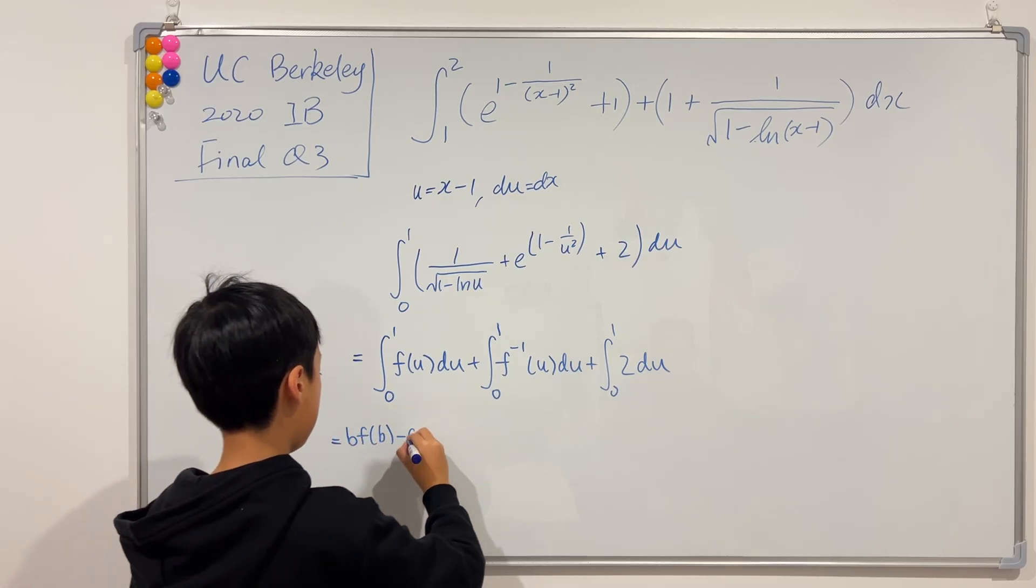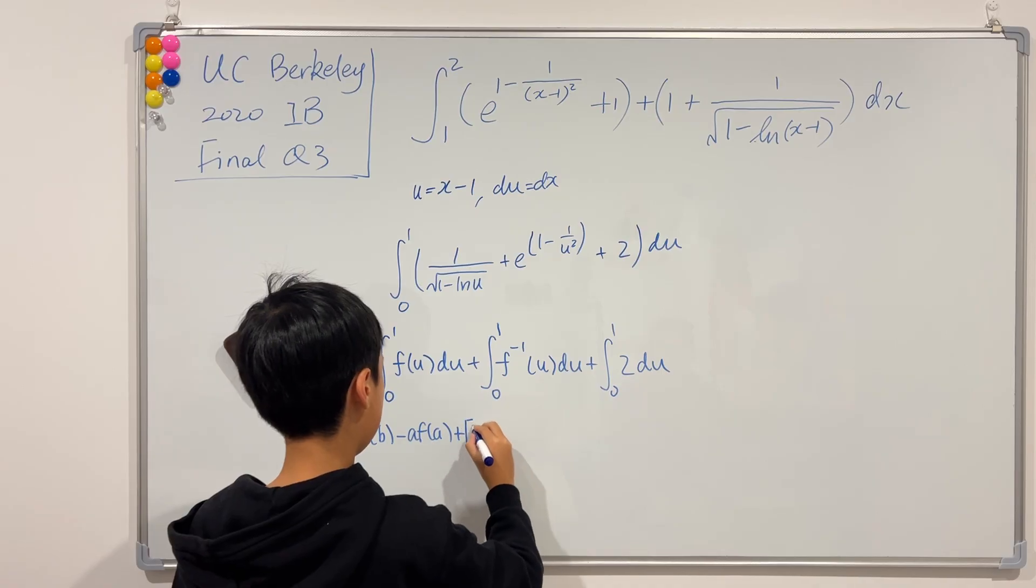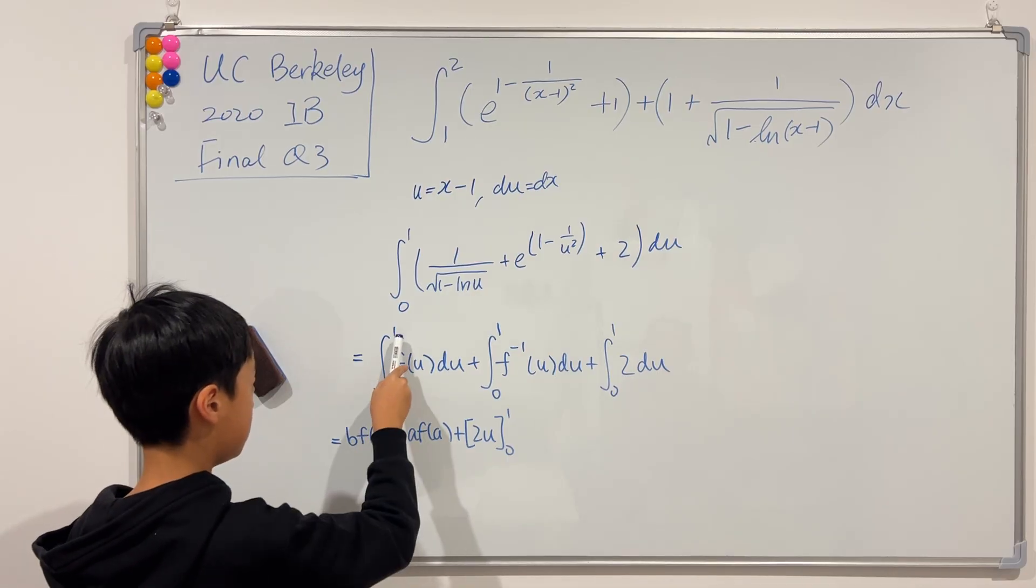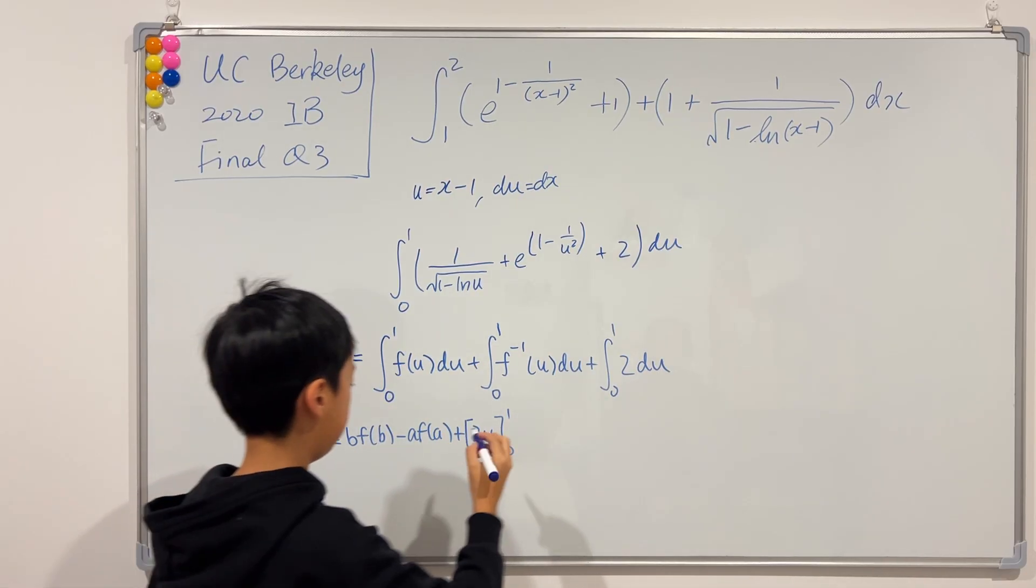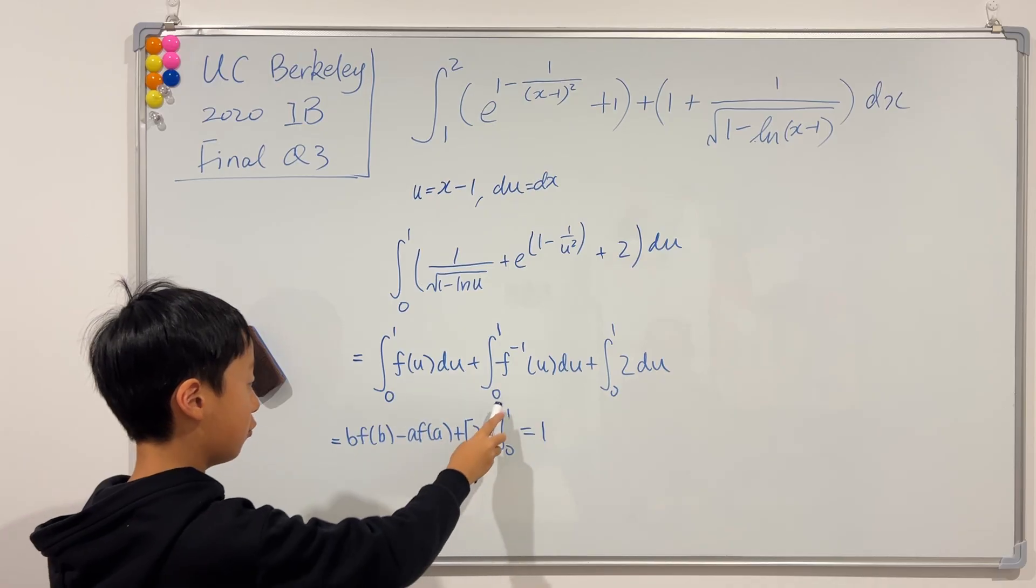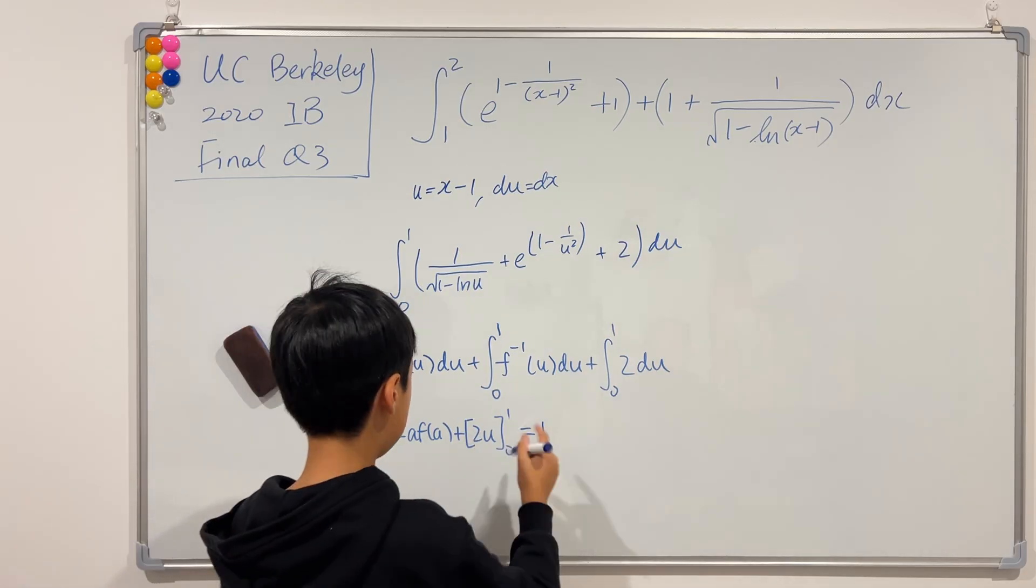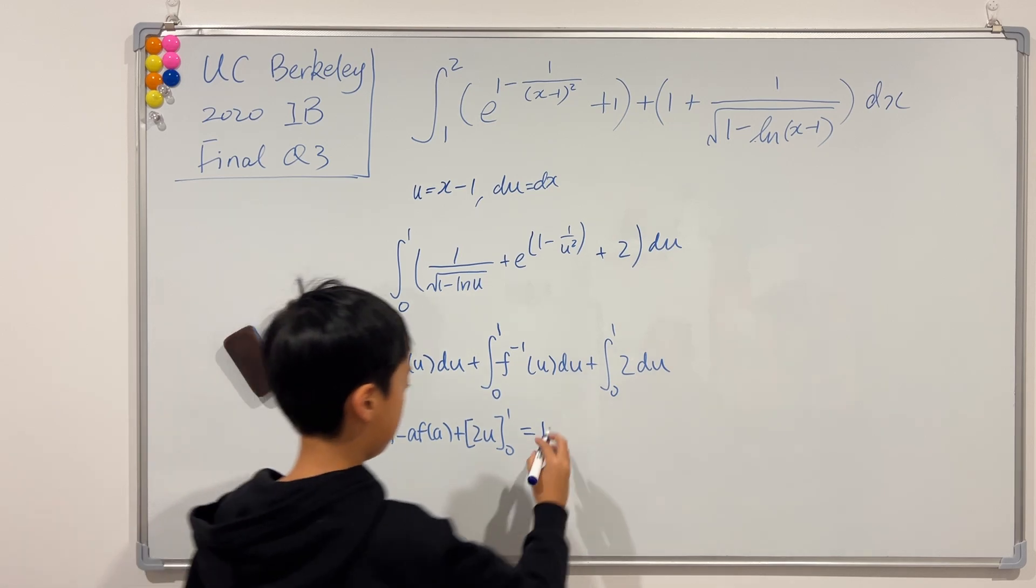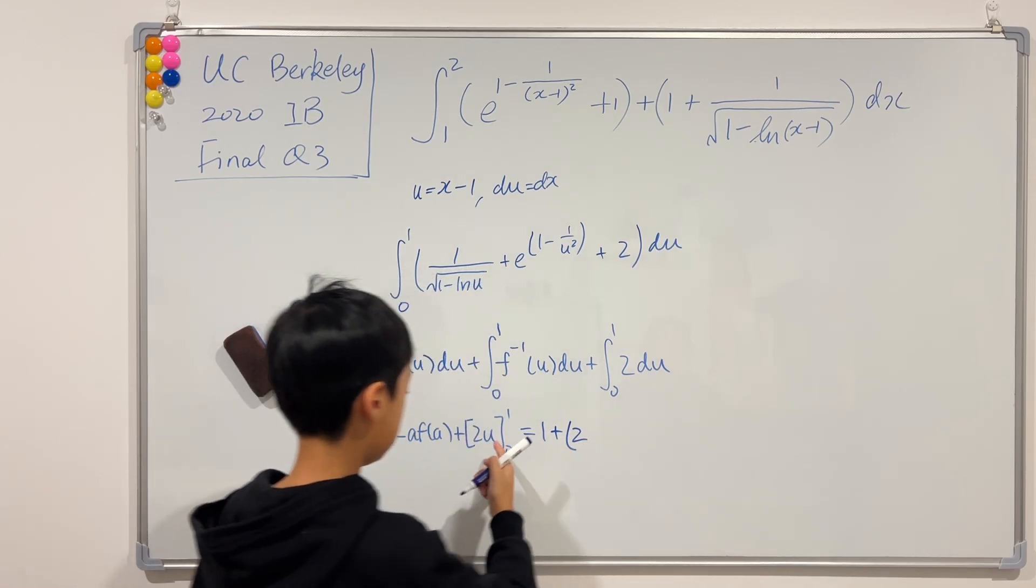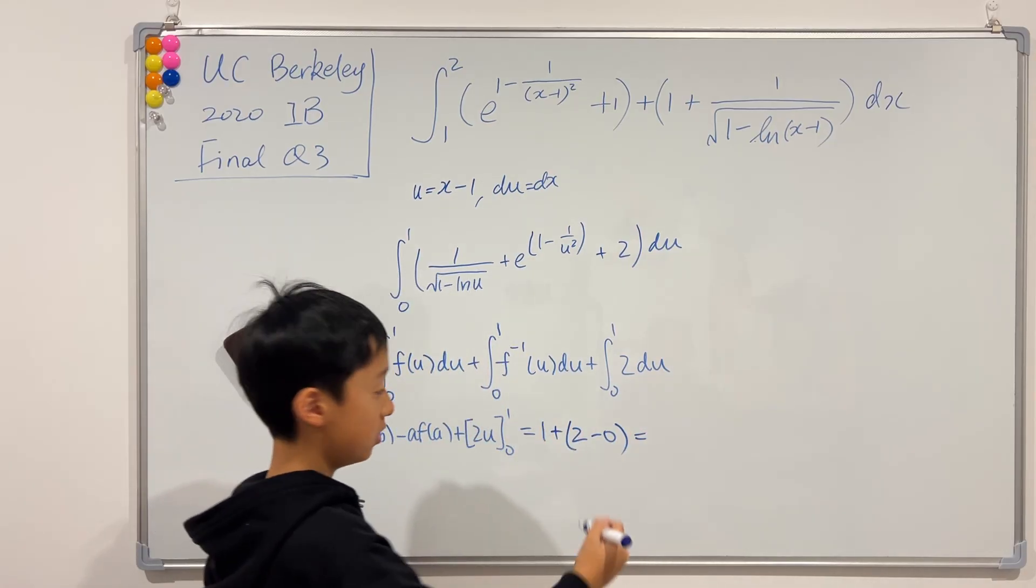Okay, so let's figure this out. b, which is 1, times f(b), which is 1, is 1. Then a, which is 0, times f(a), which is 0, is 0. So this is 0 minus 0, doesn't matter. So now we add this. 1 plus 2, which is 3.